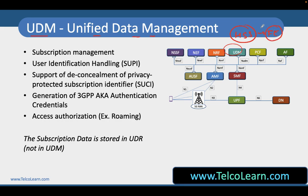The data repository — the data stored — is in UDR, which is another network function, and the authentication part is taken care of by AUSF, or Authentication Server Function. UDM does the subscription management; it holds the SUPI value. SUPI is the identity for the user, called the Subscription Permanent Identity, but the user doesn't use this identity as it is.